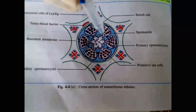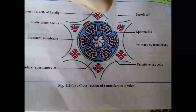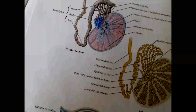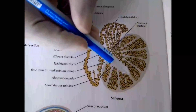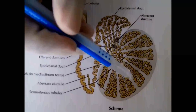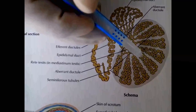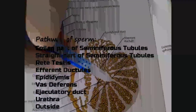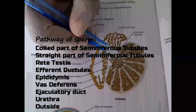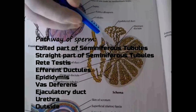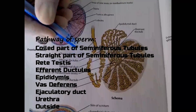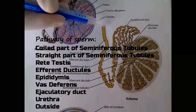The process is spermiogenesis, resulting in spermatozoa. In the pathway of sperm: the seminiferous tubules have a coiled part and a straight part. The straight part leads to the rete testis, then to the efferent ductules, then to the epididymis, and finally to the vas deferens (ductus deferens).